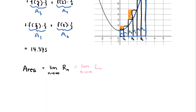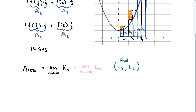We'll explore the left endpoint approximation method in the next video, along with another method called the midpoint approximation. For a little practice, try using f(x) = x² + 1 to compute L3 and L6. For L6, you should get 9.875. Think about what's different in the computation between L6 and R6. We won't do that here — we'll talk about L6 in the next video.